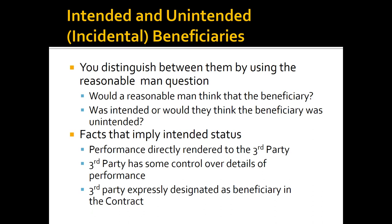How do we distinguish between an intended beneficiary who can sue and an unintended beneficiary who cannot? We resurrect our old friend, the reasonable man. Would a reasonable man think the beneficiary was intended or unintended? If you'd think he was an intended beneficiary, that party can sue. If you'd say he's more like the guy who owns the lot across from the hotel — unintended — then he has no rights under it. We do look at facts: Was any performance rendered to the third party? Did the third party have any control? Was the third party expressly designated as a beneficiary? The more contact and involvement that third party has — even if not in privity — the more likely they're an intended beneficiary who can sue and enforce.